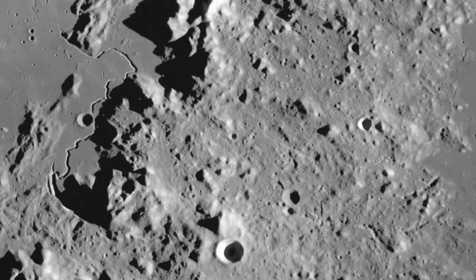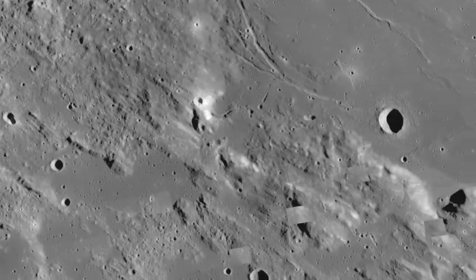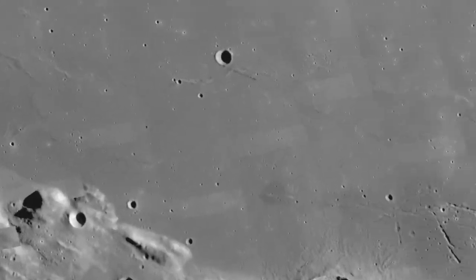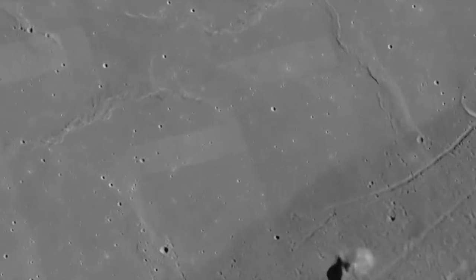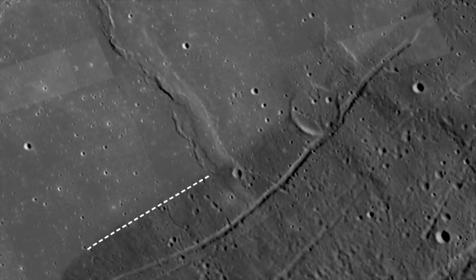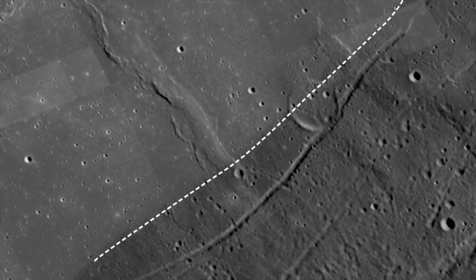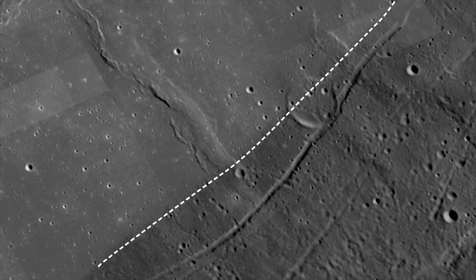Color and contrast in WAC images give us clues about the chemical makeup of the lunar soil. The sharp border between the seas of Serenity and Tranquility, for example, is probably caused by differing amounts of titanium.